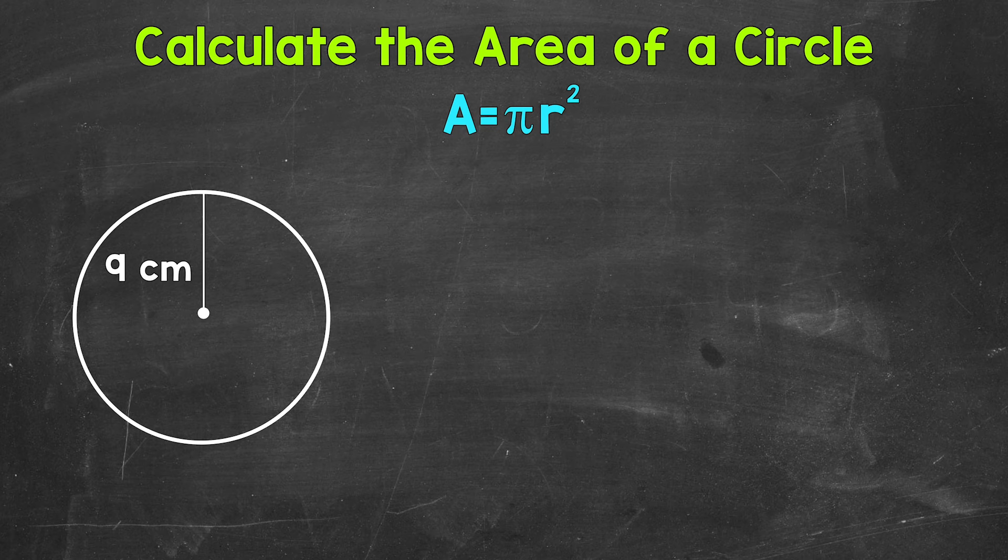So we do need to be familiar with both diameter and radius when we work with circles. Diameter is the distance all the way across a circle. So it's a line segment that connects two points on the circle, and it has to go through the center. And then the radius is half the diameter. So it goes from the center to any point on the circle.